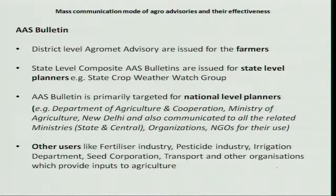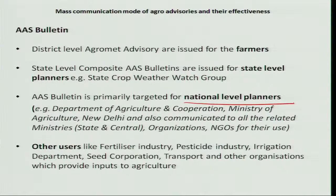The agro-advisory bulletin (AAS bulletin) was primarily issued for the farmers and has four different types. The district-level agro-meteorological advisories are issued for farmers. The state-level composite agro-advisory service bulletins are issued for state-level planners, that is, for the state crop weather watch group. The AAS bulletin is also primarily targeted for national-level planners, namely the Department of Agriculture and Cooperation and Ministry of Agriculture, and communicated to all related ministries from state to central, as well as organizations and NGOs.